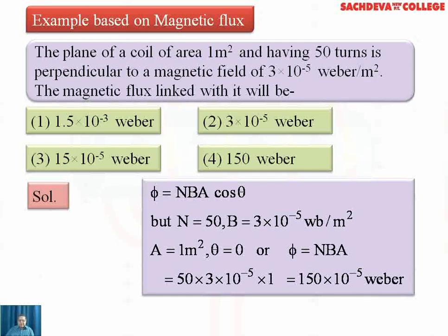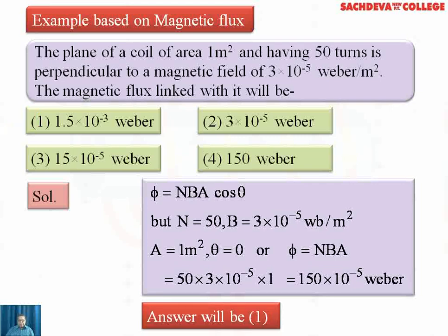This can also be written in terms of significant figures. Divide the number by 100 and multiply the exponent accordingly: 150×10⁻⁵ becomes 1.50×10⁻³ Webers. So the first option is correct. We must be accurate during calculations and express answers in significant digits — that is why we divided and multiplied by 100, giving us the first option.